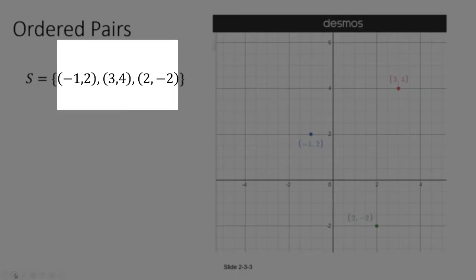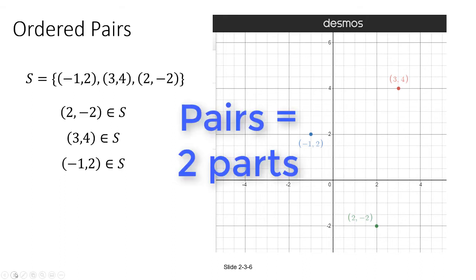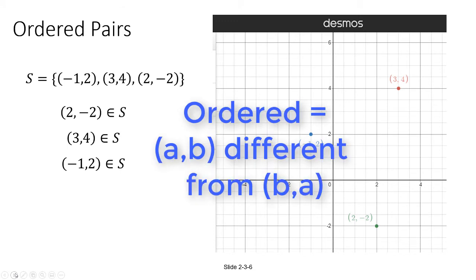We're going to think of them as a single object. So for example, (2, negative 2) with parentheses around it is actually a single element of the set S, as is (3, 4) and the ordered pair (negative 1, 2). Now the reason they're called pairs is because there are two parts to it — a first component and a second component. And the reason why they're called ordered is because the order matters. The ordered pair (negative 1, 2) is not the same thing as the ordered pair (2, negative 1). They're not equal.